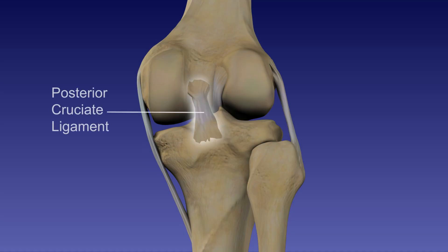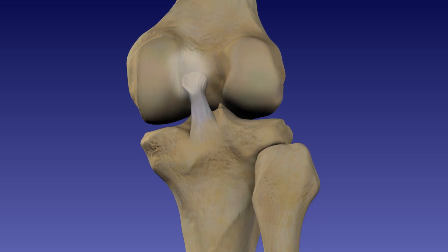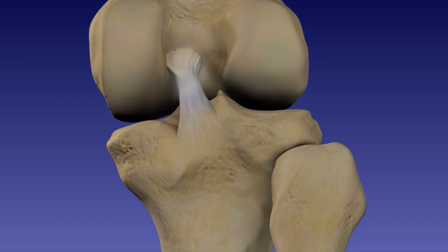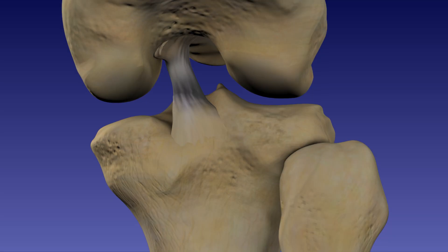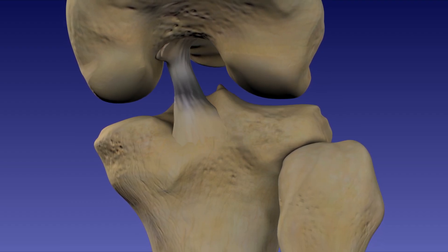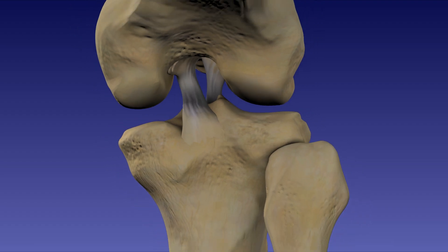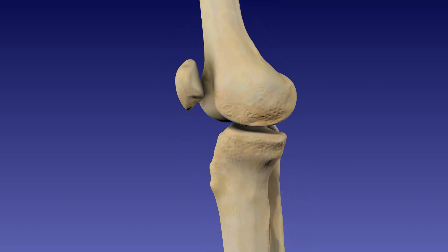This is the posterior cruciate ligament, or PCL. It connects the posterior intercondylar area of the tibia to the anterolateral surface of the medial condyle of the femur. The PCL prevents anterior displacement of the femur on the tibia and hyperflexion of the knee joint. Portions of both ligaments are taut in every joint position.